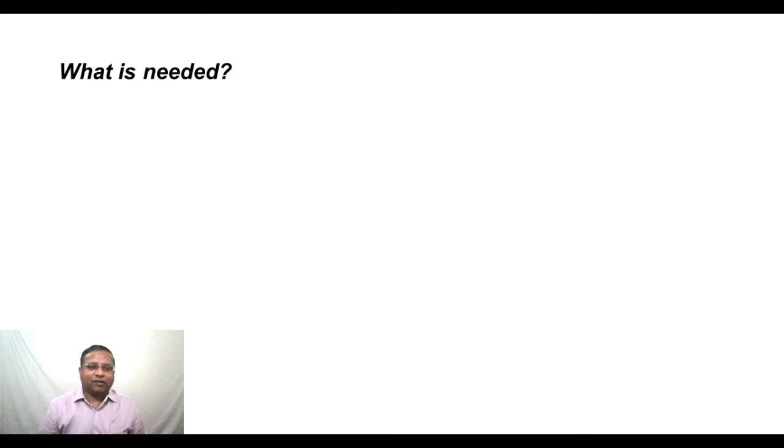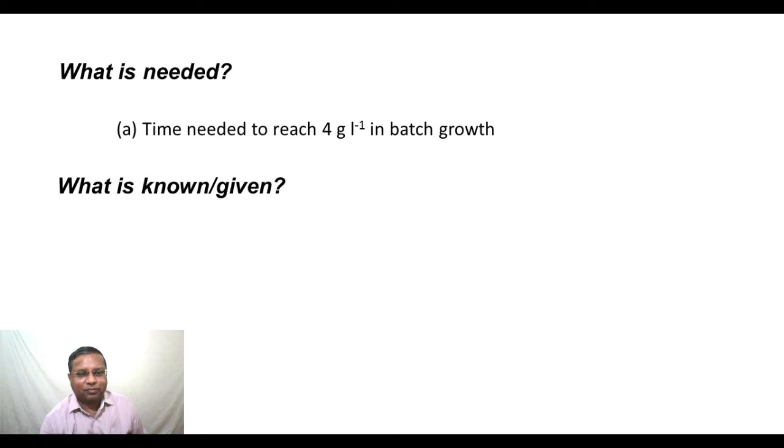Let us look at the solution. Let me maximize this first and start looking at the solution. We will ask our same questions for closed-ended problem solving. What is needed? What is needed here in part A is the time required to reach 4 gram per liter in batch growth.